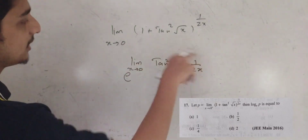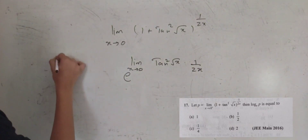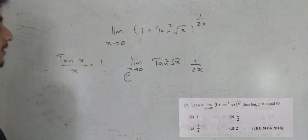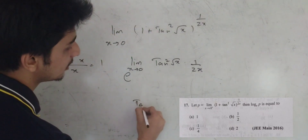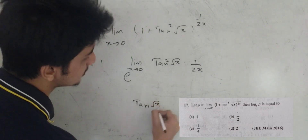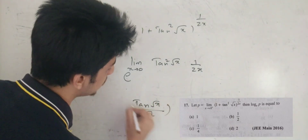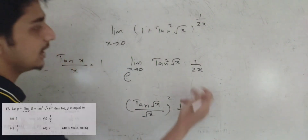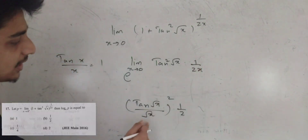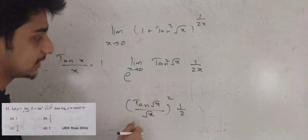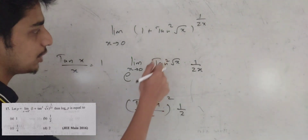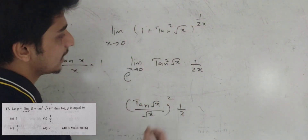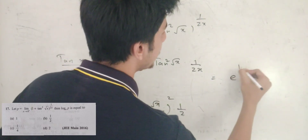This limit will be equal to e to the power of limit as x tends to 0 of tan x by x, which equals 1. Then tan√x by √x whole squared is 1 squared, and x is 1 squared. So our answer is e to the power 1 by 2.